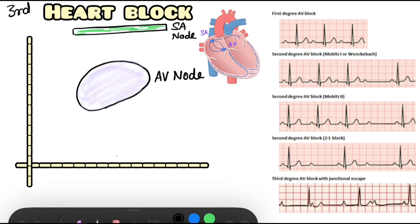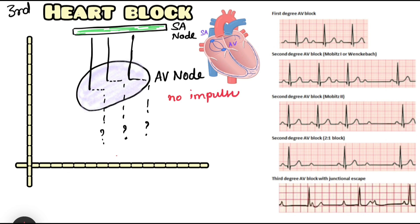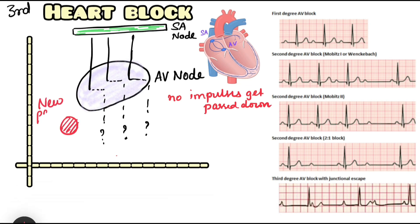On the backdrop of this understanding, we come to the third degree heart block. Here, there is no relation between atrial and ventricular paces because all the impulses coming down from the SA node are not getting passed down to the ventricles — there are no QRS complexes getting passed down. Hence, an ectopic pacemaker develops in the ventricles. This new pacemaker starts to give off ventricular impulses, and hence there is complete dissociation between atrial and ventricular paces.